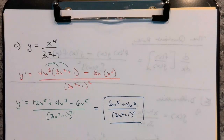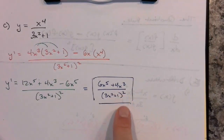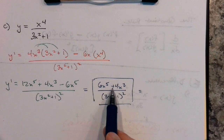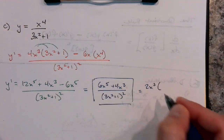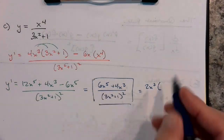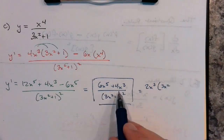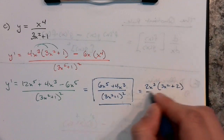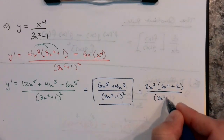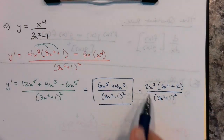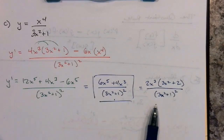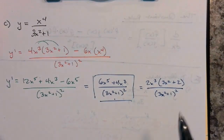You could factor 2x³ from the numerator: 2x³(3x² + 2) over (3x² + 1)². Factoring doesn't give any advantage here since these aren't common factors that cancel with the denominator. So that simplified form is fine for your final answer. Sometimes checking if anything cancels is helpful, and you'll see that more later in the course.